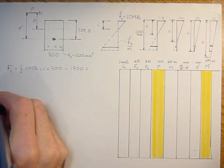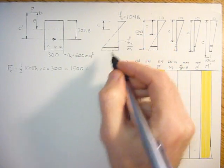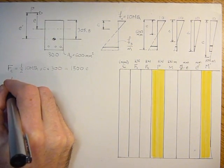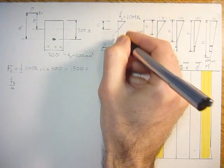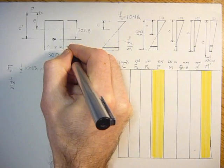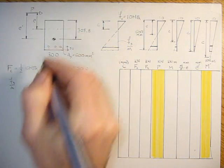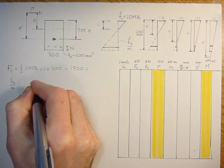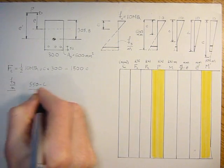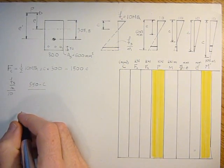And then the force in the steel. Well actually, before we do force in the steel, we've got to get the relation between the stress here and the stress in the steel. So it's a similar triangle problem. Fs over N is to this distance, which is 550. If this is 50 here and that's 600, then the distance from here to here is 550. So 550 minus C, and that is what Fc, which is 10 MPa, is to C.